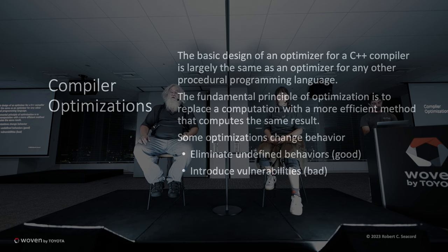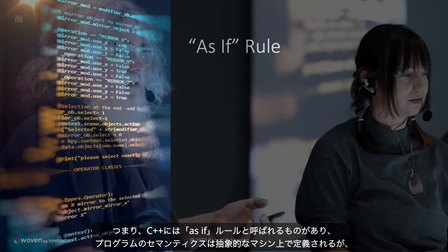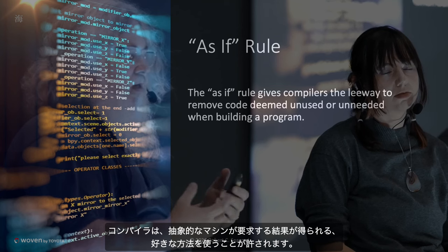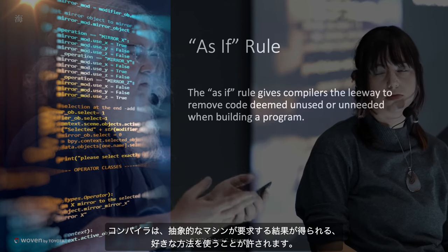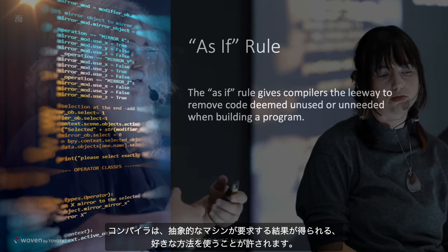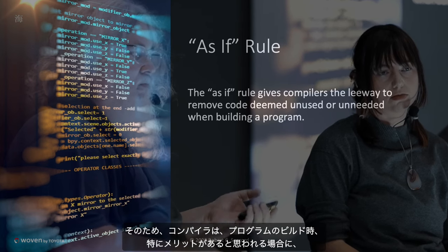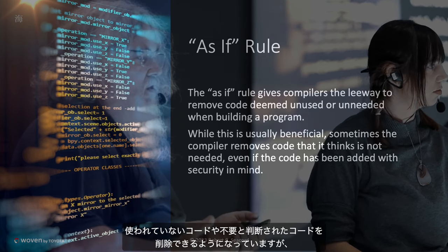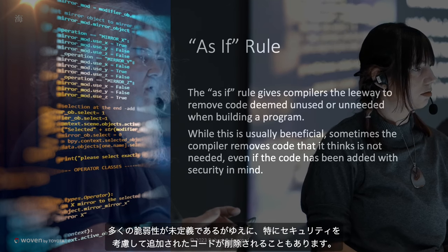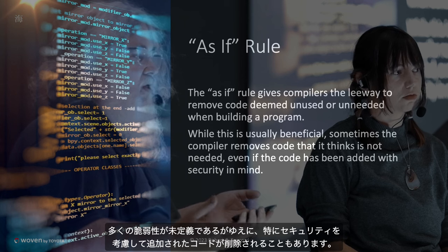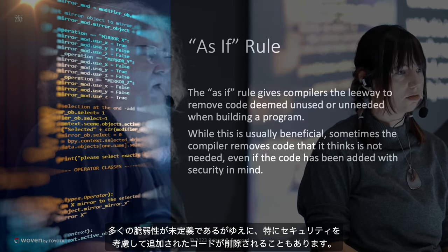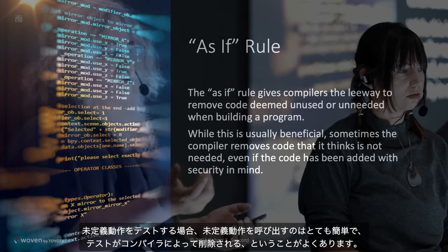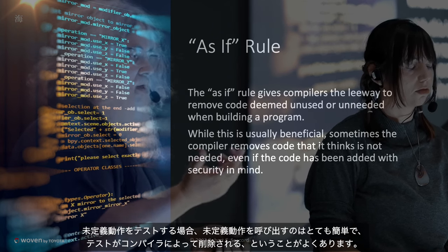C++ has something called the as-if rule, where the semantics of the program are defined on an abstract machine, but compilers are allowed to use whatever methods they want provided they get the results required by the abstract machine. This gives compilers the leeway to remove code that's deemed unused or unneeded. Sometimes it removes code that's been added with security in mind, because a lot of vulnerabilities are undefined behaviors, and in testing for undefined behavior it's very easy to invoke undefined behavior — so quite frequently your test might be removed by the compiler.